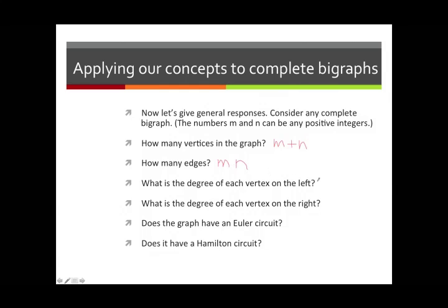What is the degree of each vertex on the left? There are m vertices on the left, but the degree of each one equals the number of vertices on the right, which is n. Similarly, the degree of each vertex on the right is m. Does the graph have an Euler circuit? By Euler's criterion, all vertex degrees must be even. The degrees are either m or n, so the graph has an Euler circuit if and only if both m and n are even; otherwise it doesn't.